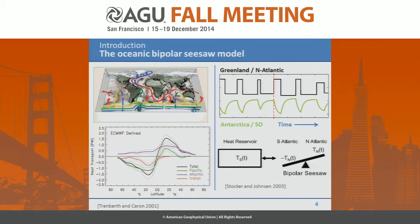This is the schematic Bipolar Seesaw model. The upper graph is Greenland — a schematic of the DO events showing rapid warmings and rapid coolings. At the same time, Antarctica has a much more muted response. The AIM events, Antarctic Isotopic Maxima, have a sort of triangular shape. During periods when it's cold in Greenland, Antarctica is warming, and vice versa. This muted response is explained in the Stocker and Johnson model by a large heat reservoir, such as the Southern Ocean, that buffers changes happening in the Atlantic.